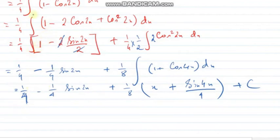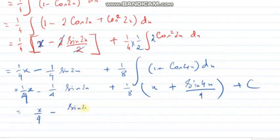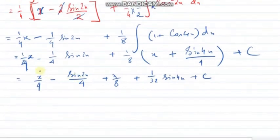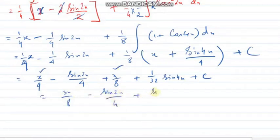The first term was actually x — I had missed that x. So combining: x/4 − sin2x/4 + x/8 + (1/32)sin4x + c. Adding x/4 and x/8 gives 3x/8. The final answer is: 3x/8 − sin2x/4 + sin4x/32 + c.